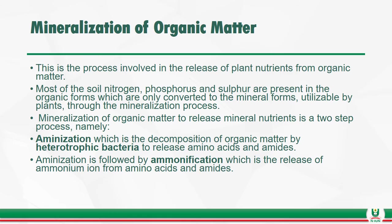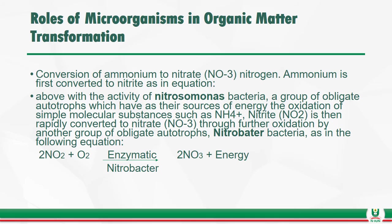What is the role of microorganisms in organic matter transformation? They act in the conversion of ammonium to nitrate nitrogen. Ammonium is first converted to nitrite by the activity of Nitrosomonas bacteria, a group of obligate autotrophs which use as their energy source the oxidation of simple molecular substances such as ammonium. Nitrite is then rapidly converted to nitrate through further oxidation by another group of obligate autotrophs, Nitrobacter.